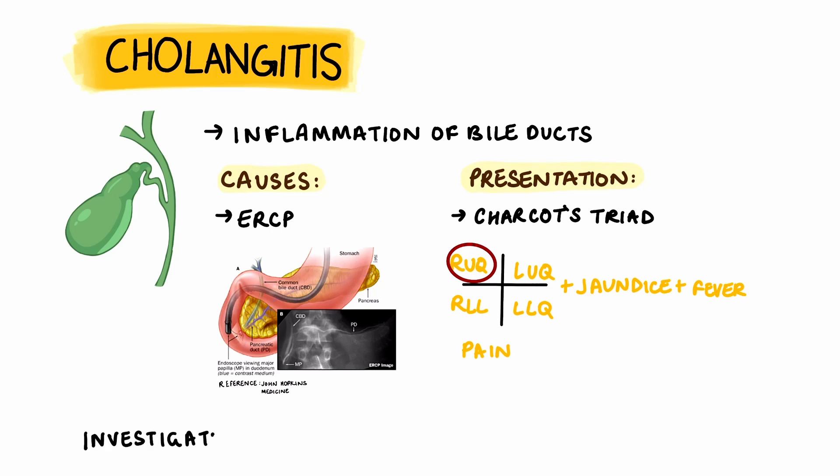Investigations are very similar. Acute cholangitis can be identified using an abdominal ultrasound or MRCP.